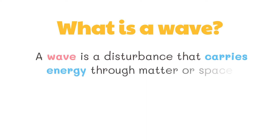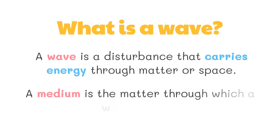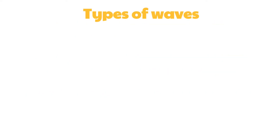A wave is a disturbance that carries energy through matter or space. A medium is the matter through which a wave travels. In the case of a water wave in the ocean, the medium through which the wave travels is the ocean water.